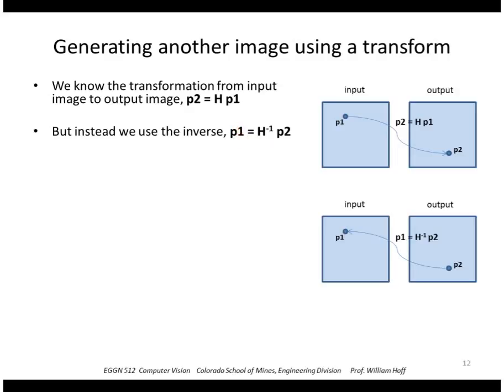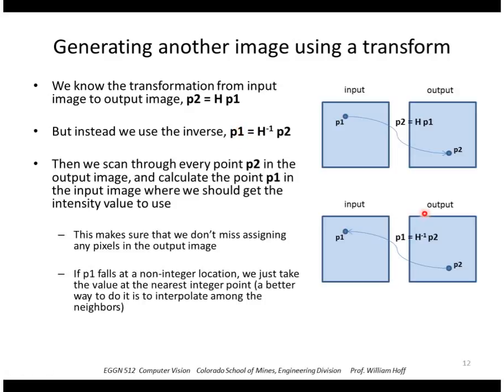So that way we can scan through image 2, visit every possible pixel, and then given a P2 in image 2 we figure out where that came from in image 1 and we use that intensity value to store at that point in image 2. So that makes sure that we don't miss assigning any pixels in the output image. So I'm just going to use the nearest neighbor. So if P1 falls on a non-integer position we'll just use the closest point in image 1, but a better way would be to interpolate among the nearest neighbors.